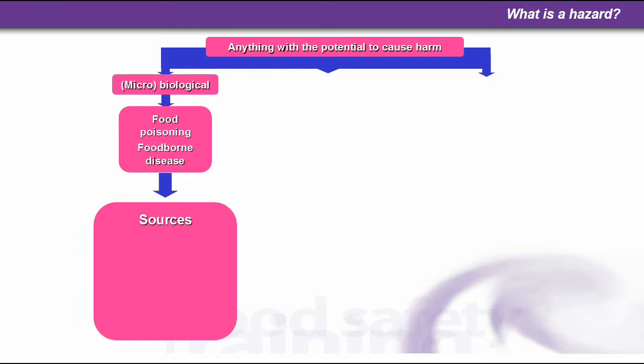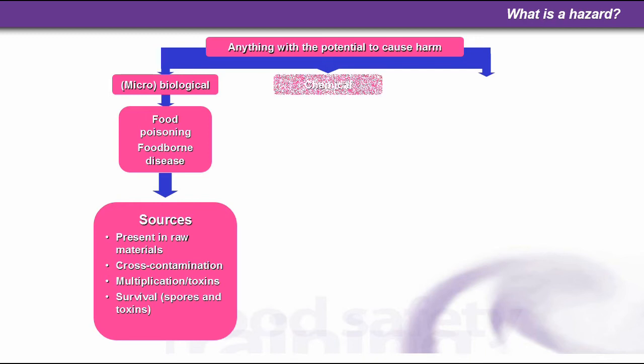The sources of microbiological contamination include: it could be present in raw materials, cross contamination during the process, multiplication of bacteria as they grow and toxins released from bacteria when they grow, and the survival of spores and toxins.